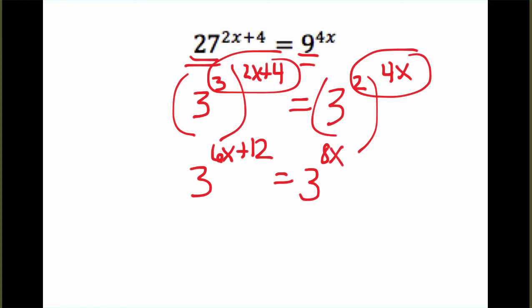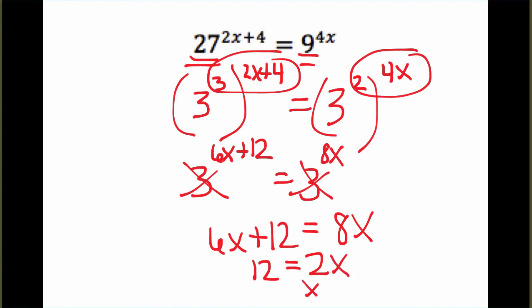Now, since the bases are the same, we can cancel. We get 6x plus 12 equals 8x. And if we solve that for x, we'll subtract 6x from each side. So 12 equals 2x. And if we divide by 2, x equals 6.